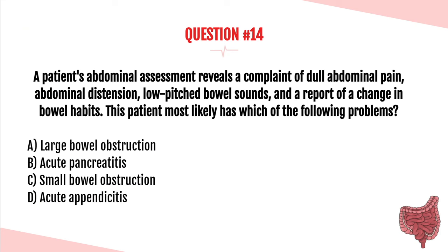Question number fourteen. A patient's abdominal assessment reveals dull abdominal pain, abdominal distension, low-pitched bowel sounds, and a change in bowel habits. This patient most likely has which of the following? A. A large bowel obstruction. B. Acute pancreatitis. C. Small bowel obstruction. Or D. Acute appendicitis. The answer is A — a large bowel obstruction.